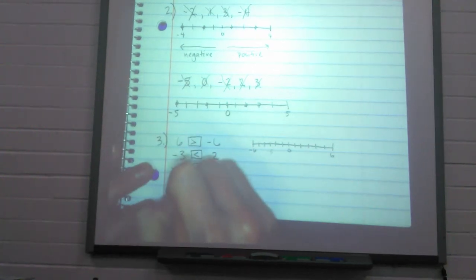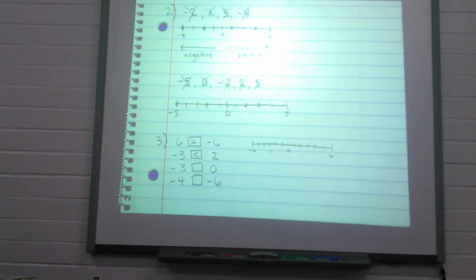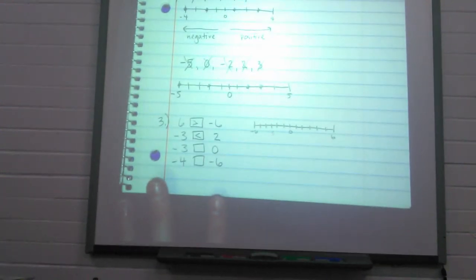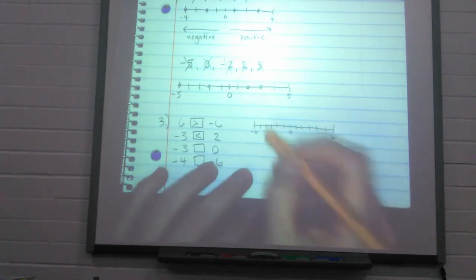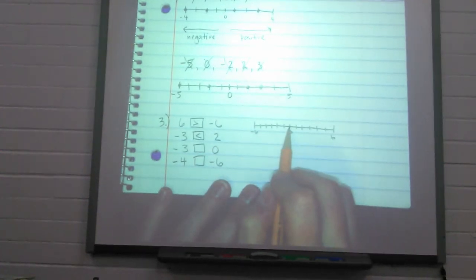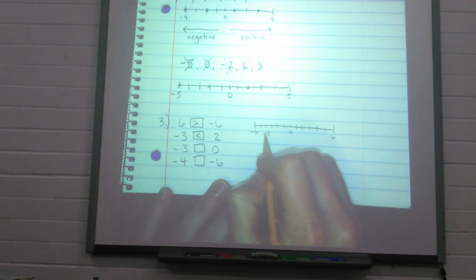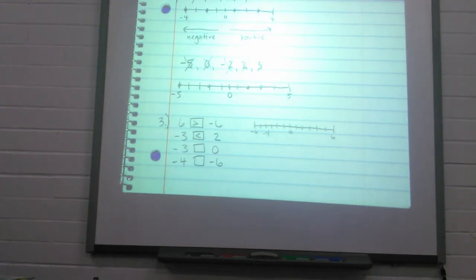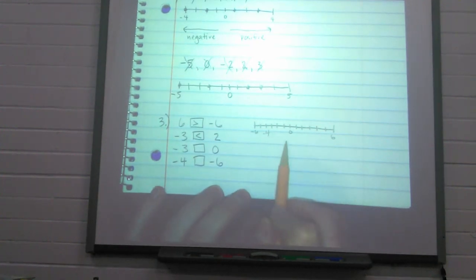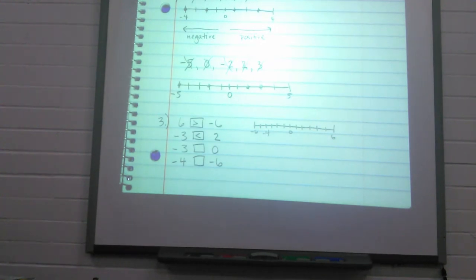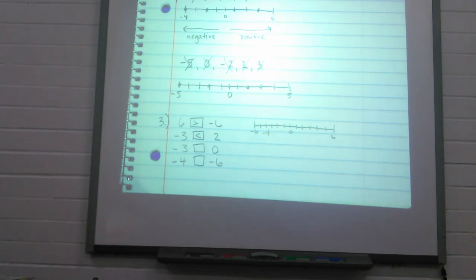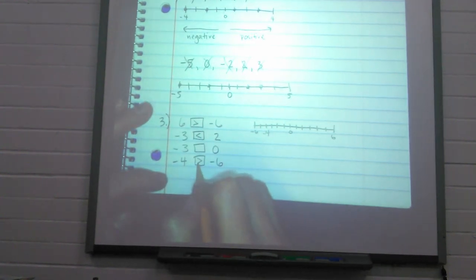Next example: negative four and negative six. This one is a little tricky. With negative numbers, it works opposite of positive numbers — the bigger the negative number, the farther away from zero it is. So the number closest to zero is going to be bigger when both numbers are negative. Negative four versus negative six: which one is closer to zero? That's right — negative four. So negative four is going to be the bigger number.